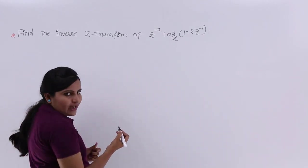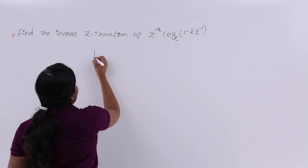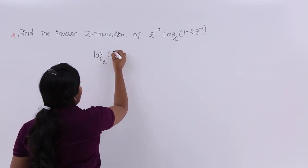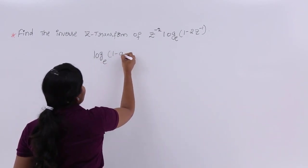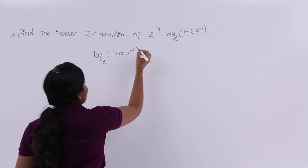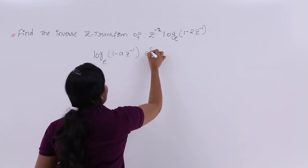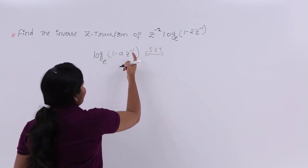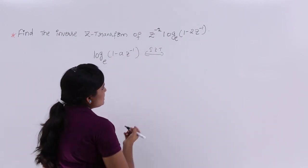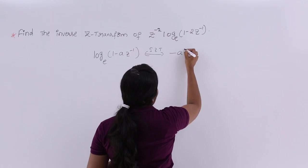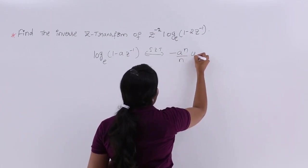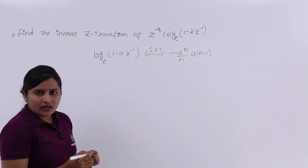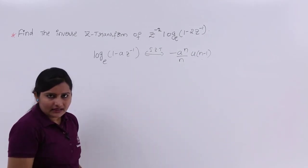In the previous class we calculated the inverse Z-transform of log_e(1 - aZ^(-1)). The inverse Z-transform of log_e(1 - aZ^(-1)) is equal to -(a^n / n) * u(n-1). This is the signal, and we calculated it in the last class.